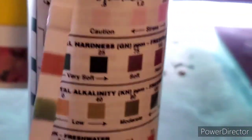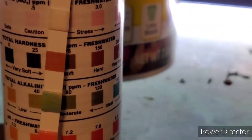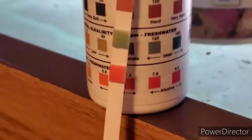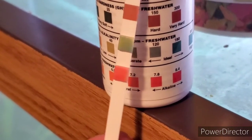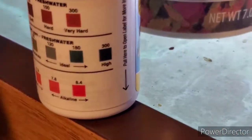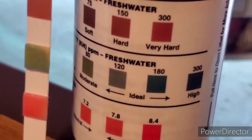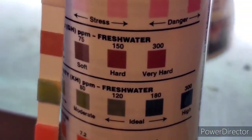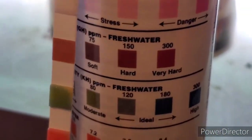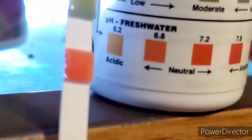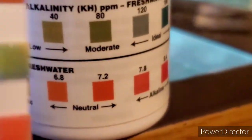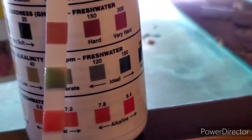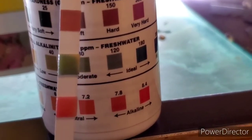Than alkalinity, which is about, let's see, let me twist it. So, my KH is about 80, and then, let's see, my pH is about 7.2.